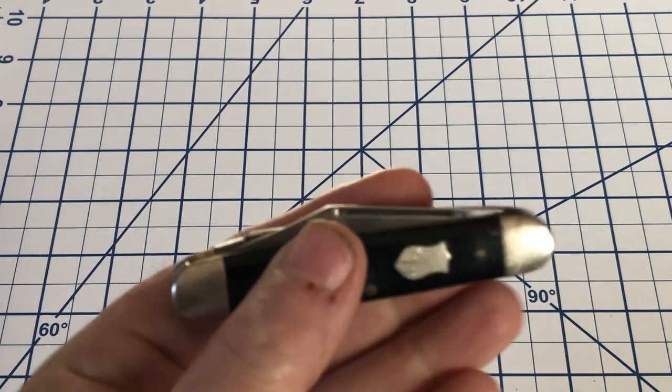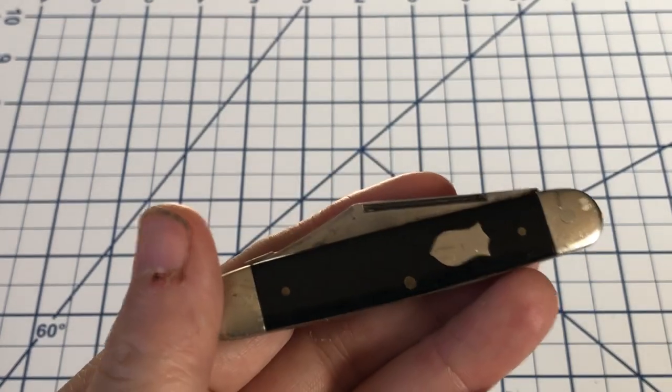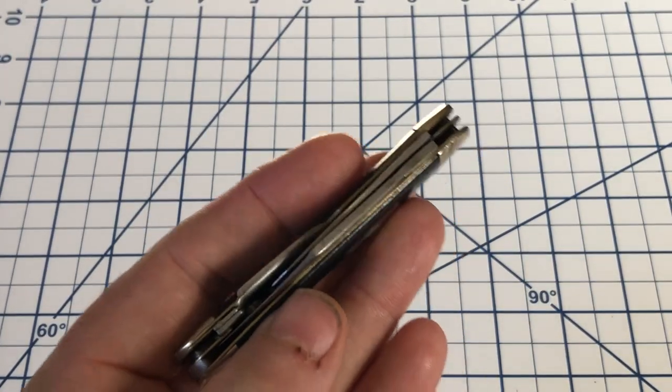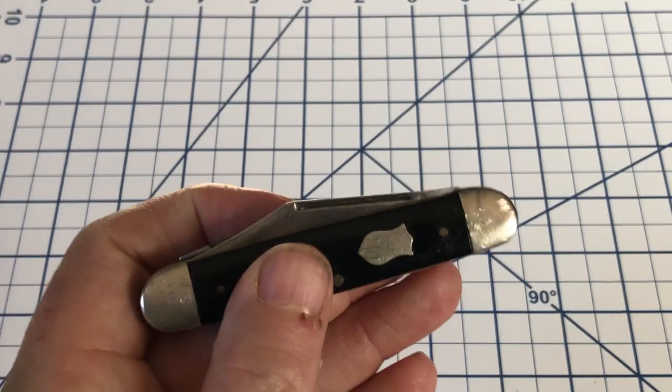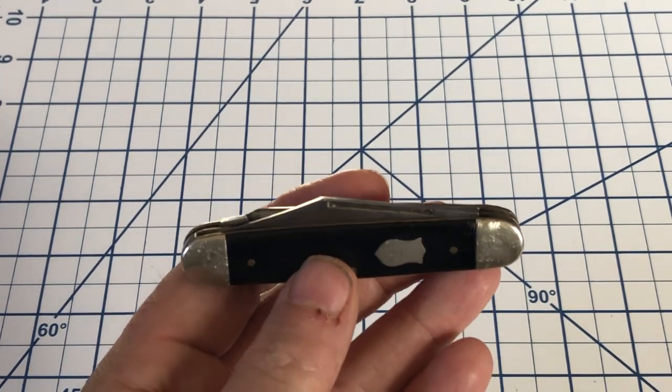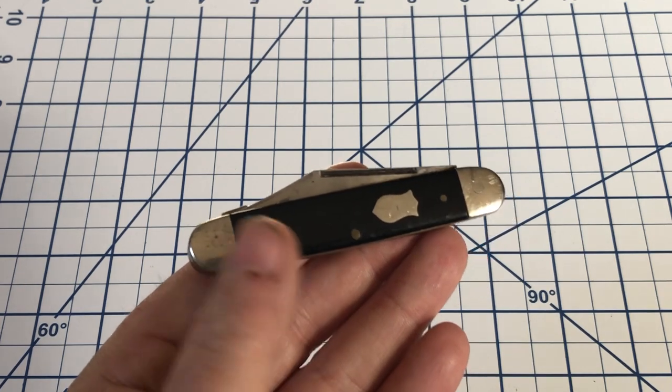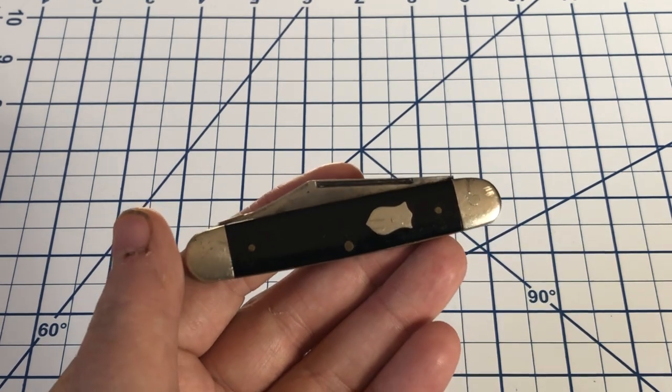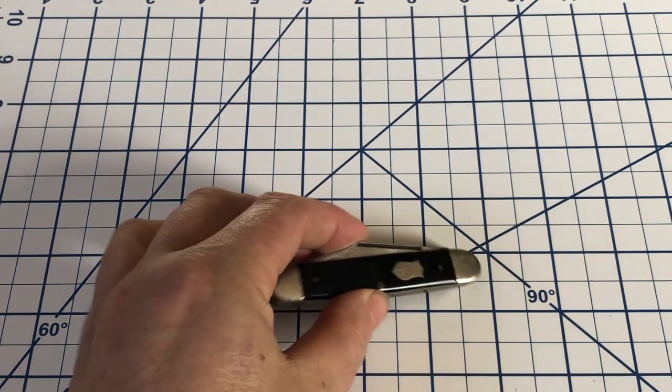These knives were made in Minneapolis between the 1930s and the 1950s. So, there is a pretty good chance that he sold, at his Gamble store, knives very similar to this.